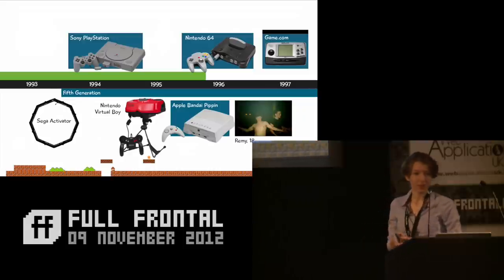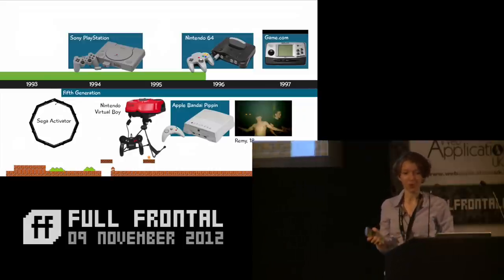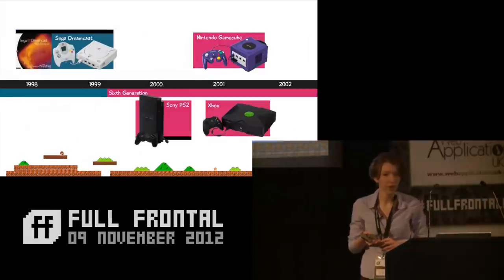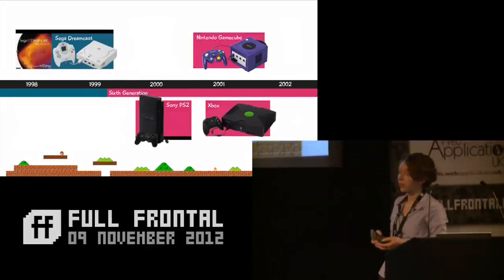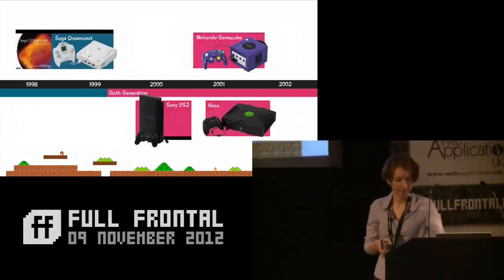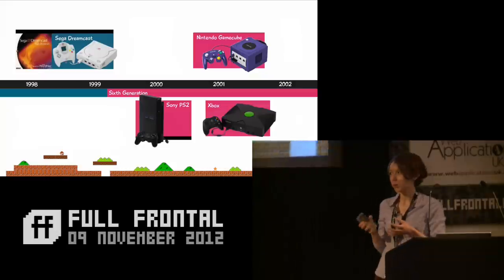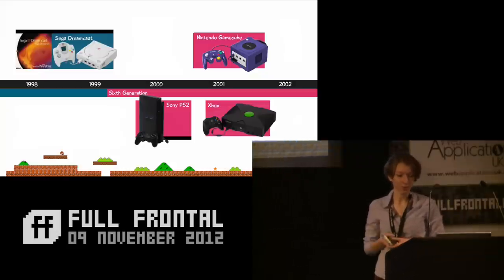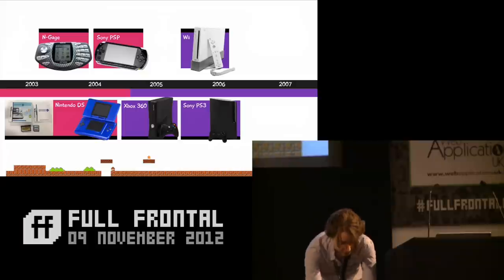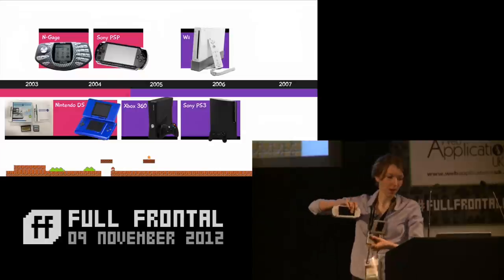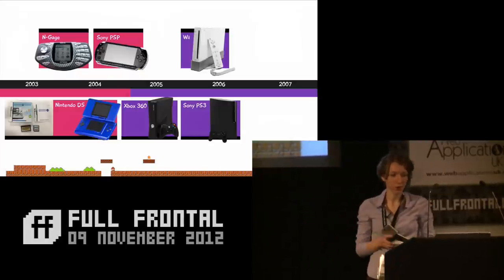In 1998, the Sega Dreamcast was the first console with a built-in modem, and you could get the browser separately on a disk. In 2000, the PS2 came out with internet capabilities needing a network access disk for the browser. In 2003, the N-Gage — often called the Taco Phone — was a hybrid phone gaming device with a browser. In 2004, the Nintendo DS and PSP launched as the first in a range of portable consoles with internet capabilities.